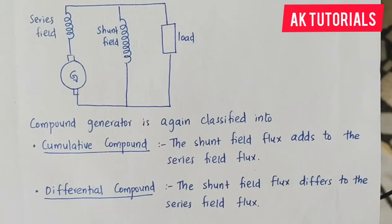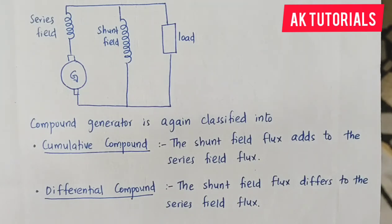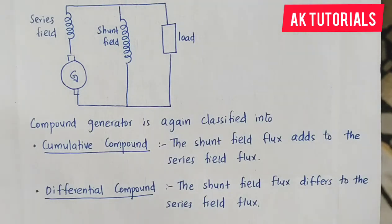To summarize the classification of DC generator: it is based on excitation. The two classifications are separately excited DC generator and self-excited DC generator. Self-excited DC generator is classified as series generator, shunt generator, and compound generator. Compound generator is classified as long shunt and short shunt, and winding-wise as cumulative compound and differential compound.